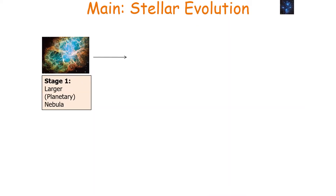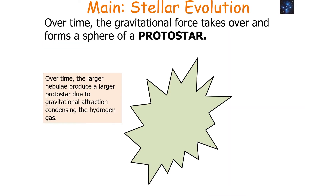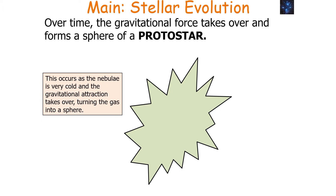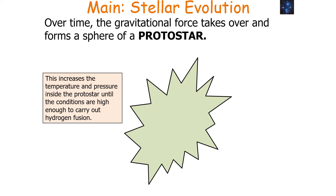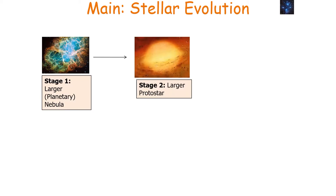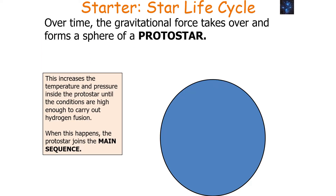We start with the larger nebula at the beginning of a star's life cycle. Over time, the gravitational force takes over and forms a sphere — a protostar. Larger nebulae produce larger protostars due to gravitational attraction condensing the hydrogen gas. This occurs as the nebula is very cold and gravitational attraction takes over, turning the gas into a sphere. This increases the temperature and pressure inside the protostar until the conditions are high enough to carry out hydrogen fusion. So we go from larger nebula to larger protostar.